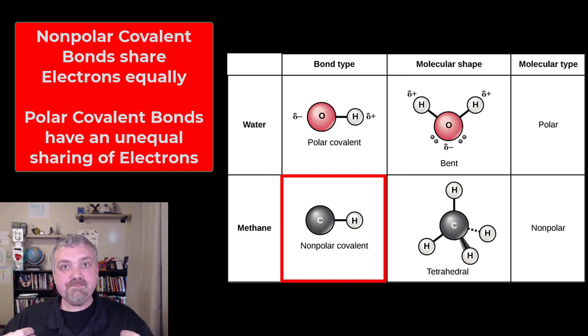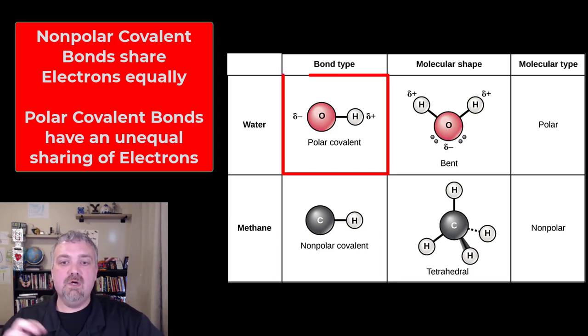My favorite example with polar covalent bonds would be tug of war. So let's talk about polar covalent bonds. It's when the sharing is unequal. So you see here at the bottom, methane would be nonpolar covalent bonds because the sharing of electrons is equal. Water is going to have polar covalent bonds because the sharing is unequal.